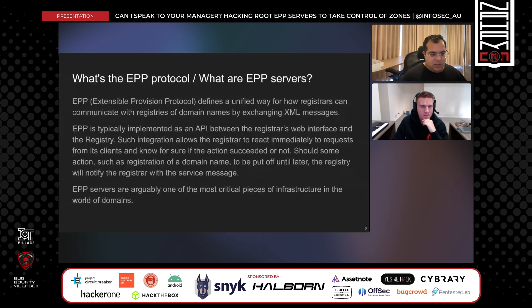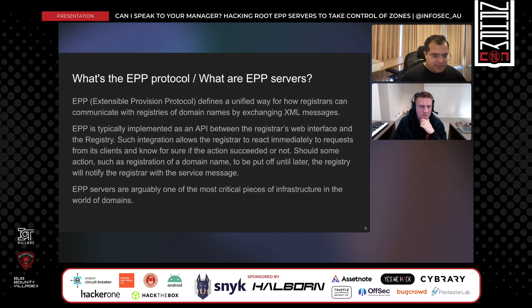The next thing to explain is what the EPP protocol is. If you don't work in the TLD or domain registry space, you wouldn't have heard of it. The Extensible Provisioning Protocol is a unified way that registrars and registries communicate by exchanging XML messages. It's usually exposed on port 700 and takes XML messages. It may or may not require authentication through a mutual SSL certificate. It's one of the most critical services on the internet because almost every registry has to run an EPP server, and if you compromise that EPP server, you compromise every registrar and domain connected to that registry.